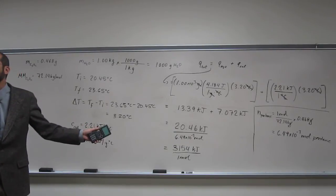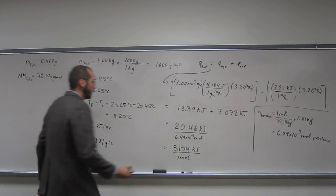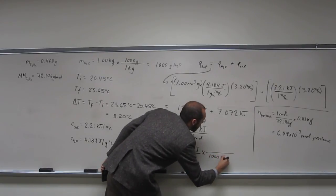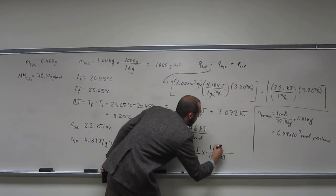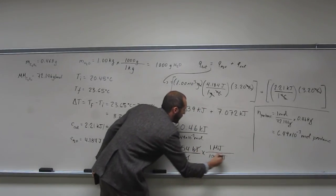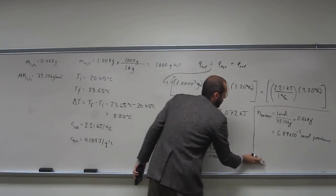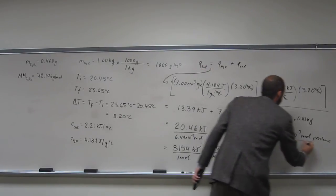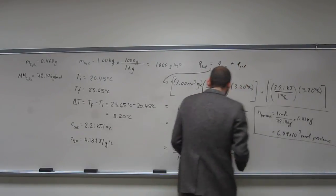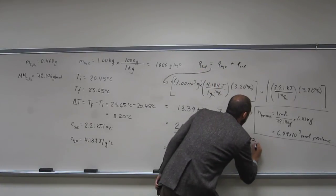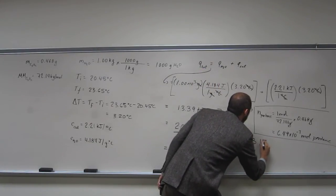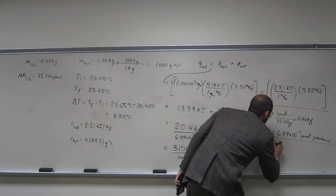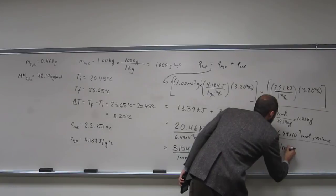And remember, I wanted to do megajoules per mole. So 1,000 kilojoules per one megajoule. When we do that, we get 3.15 megajoules per mole.